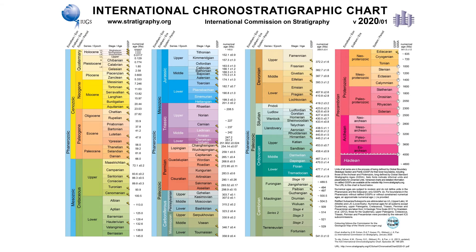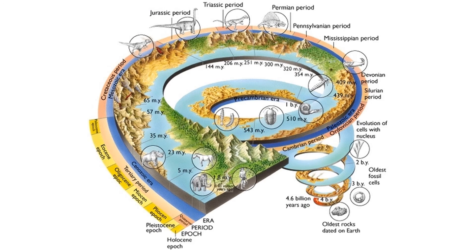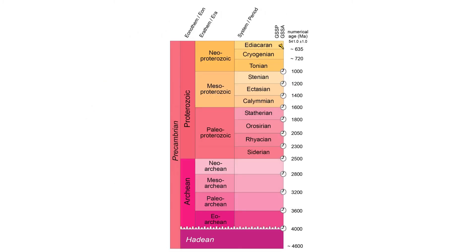We refer to the first part of Earth history as the Precambrian. The Precambrian includes all of the time in Earth history that passed prior to the origin of animals, around 540 million years ago during the Cambrian period. The Precambrian spanned from 4.6 billion years ago to 540 million years ago. In total, it represents nearly 90% of Earth history. Animals were very late to the party. The Precambrian is divided into three eons: the Hadean, the Archean, and the Proterozoic.